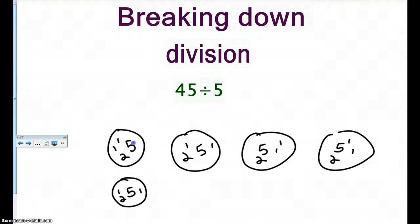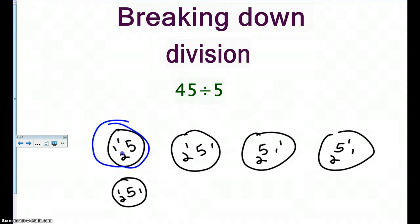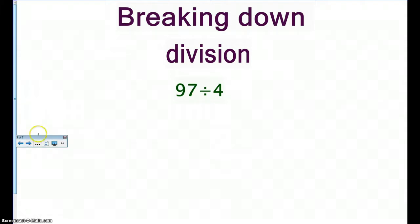I got to the number forty-five. Now I need to count how much is in just one of these circles — not all of them, just one. That's five, six, seven, eight, nine. So my quotient, my answer, is nine.